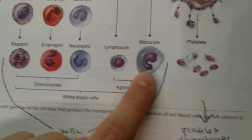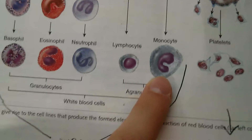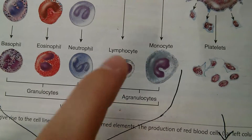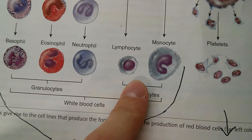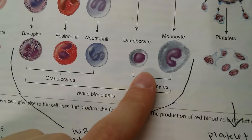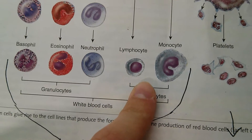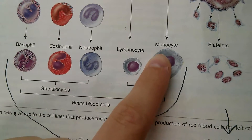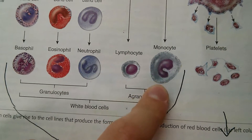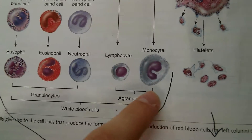Lymphocytes and monocytes can be differentiated by size: lymphocytes are the littlest of the white blood cells — L for little. And M for major, meaning monocytes are the biggest.